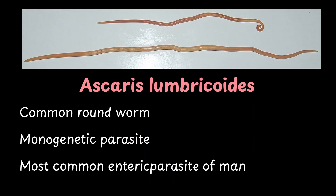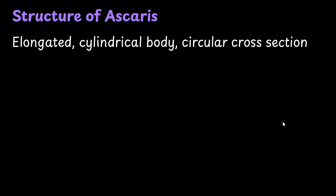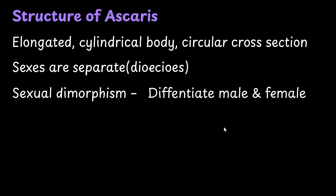Ascaris has a very elaborate life cycle, and to understand it, we have to study its structure. It has a cylindrical elongated body with a round cross section. In the phylum it belongs to, Aschelminthes, the sexes are separate, also called dioecious organisms. They also show sexual dimorphism, meaning just by looking at the organism you will be able to differentiate which is the male and which is the female.